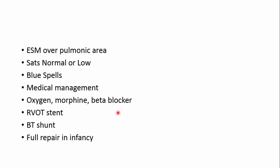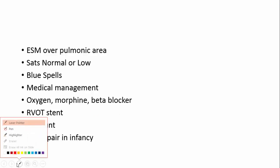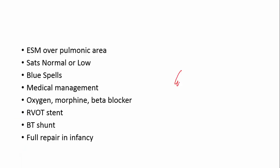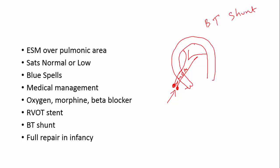Let's look at an example where the Tetralogy of Fallot is going blue badly. Here we have a pulmonary artery which is quite narrow — the stenosis is so severe that the blood can't go into the lung. The most common traditional method is called the BT shunt. You would essentially put a shunt from one of the branches into the pulmonary artery, bringing blood from the aorta into the pulmonary artery and into the lungs, thereby helping oxygenation.